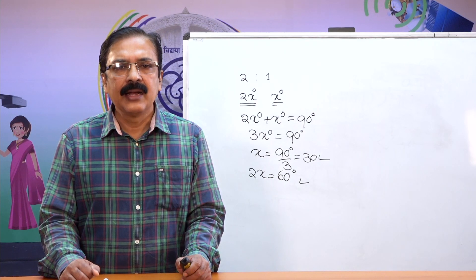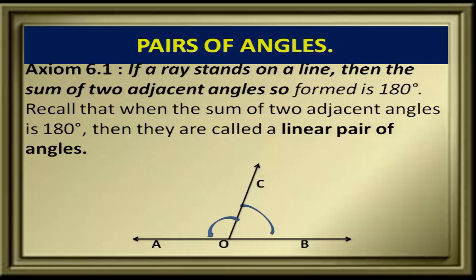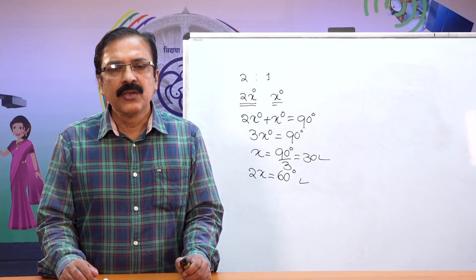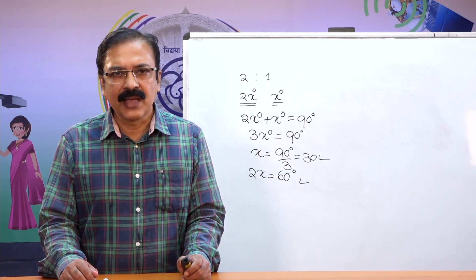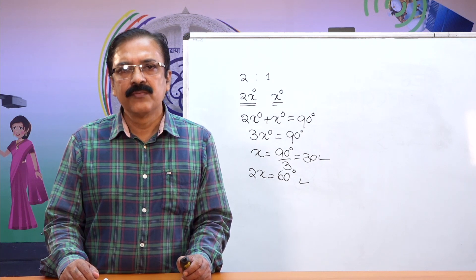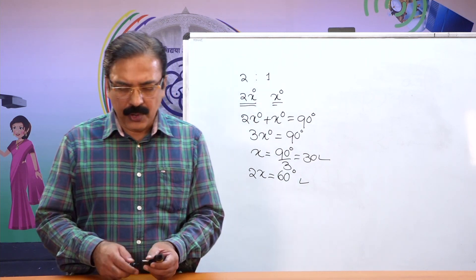Recall that when the sum of two adjacent angles is 180 degrees, they are called a linear pair of angles, as we discussed earlier.